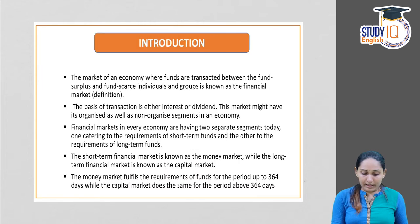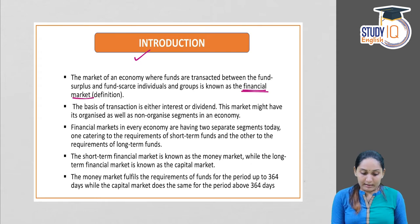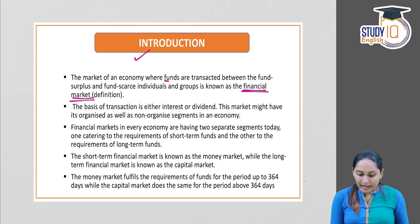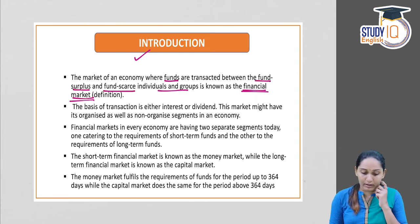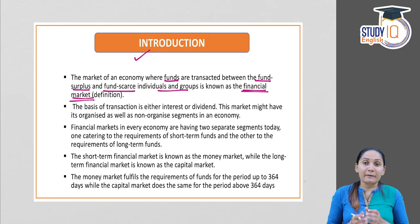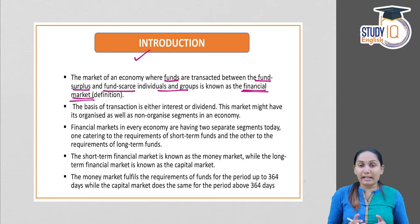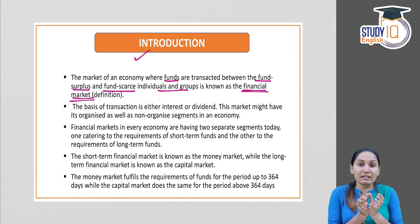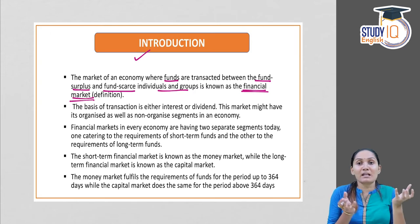Starting with the introduction. First we will see what is a financial market. The definition of a financial market: the market of an economy where funds are transacted between the fund-surplus and fund-scarce individuals and groups is called the financial market. By definition, a financial market means a market in an economy where funds are transacted from surplus to deficit.